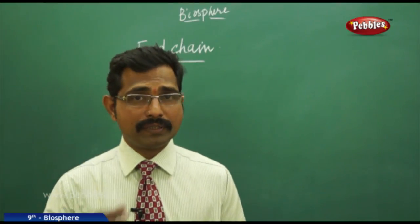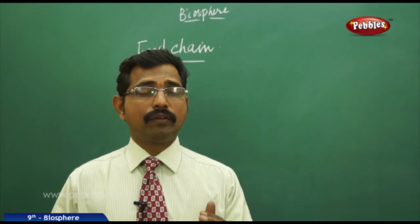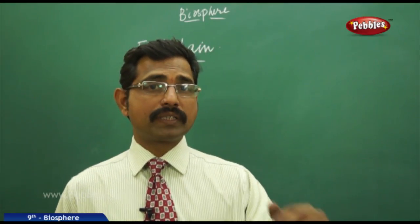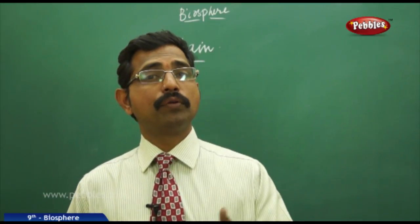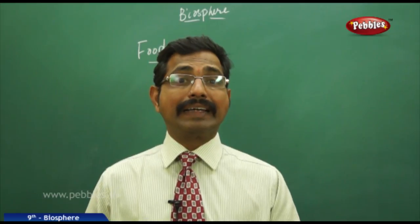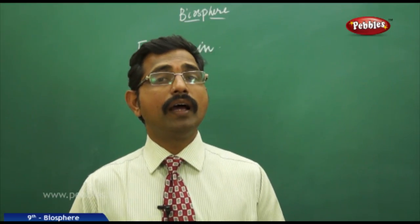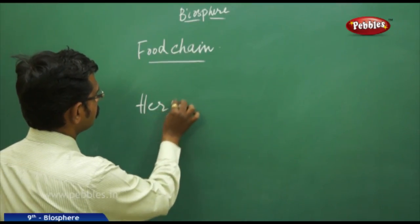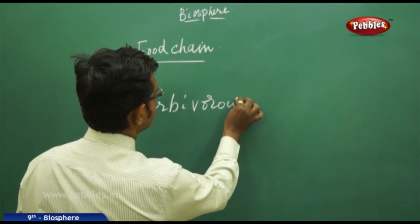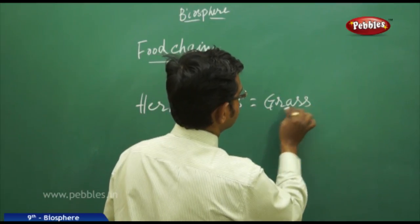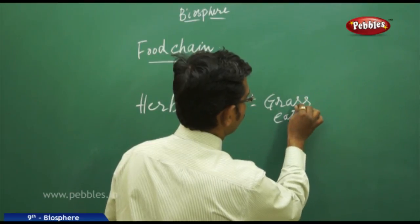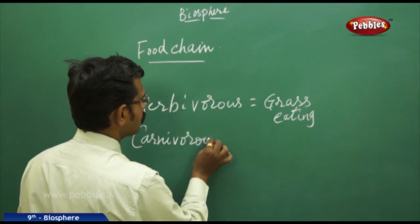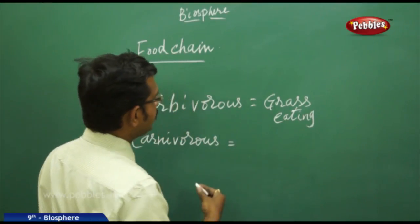We have two types of animals: those who depend on grass, plants, and vegetables — not other animals — eating grass, vegetables, and fruits are called herbivorous animals. Examples include cattle, goat, and other grass-eating animals. The animals which depend on these herbivorous animals are called carnivorous animals. Herbivorous animals are grass-eating animals, whereas carnivorous animals eat herbivorous animals.